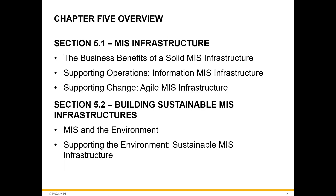Chapter 5 of the textbook is composed of two sections. Section 5.1 is going to be over the application of MIS infrastructure and section 5.2 on building sustainable MIS infrastructure. The main objective of this chapter is to provide business students with basic technical information on the MIS infrastructure of the organizations.